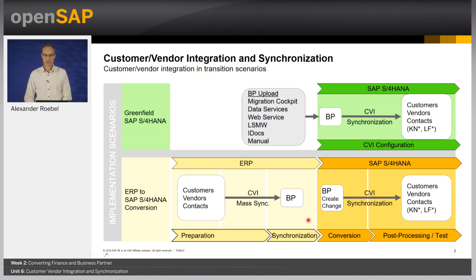During the S/4 conversion there is nothing to be executed from the Business Partner and CVI perspective. However, after S/4 conversion within the business downtime, some steps need to be done: one is the setup of S/4HANA-specific customizing, and the other important step is to carry out the first run of the HCM sync report, which often influences and is influenced by the Business Partner and CVI setup. After go-live, you have to proceed with monitoring the CVI interface by checking the PPO.